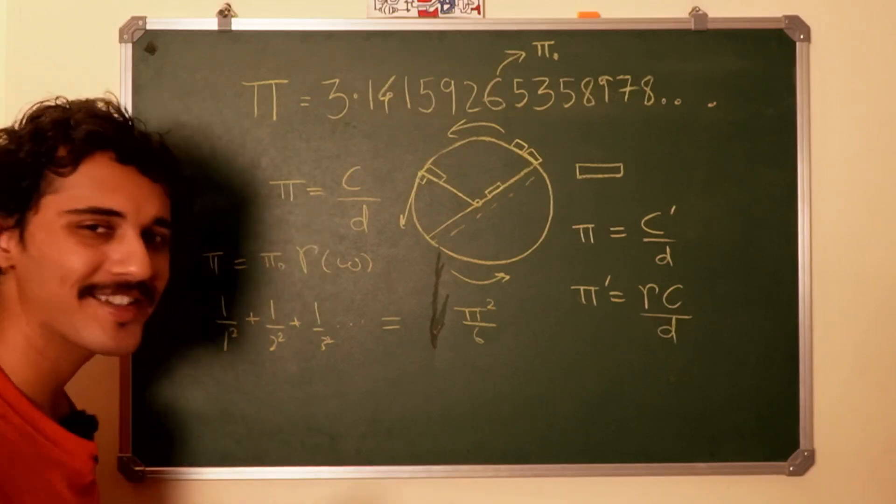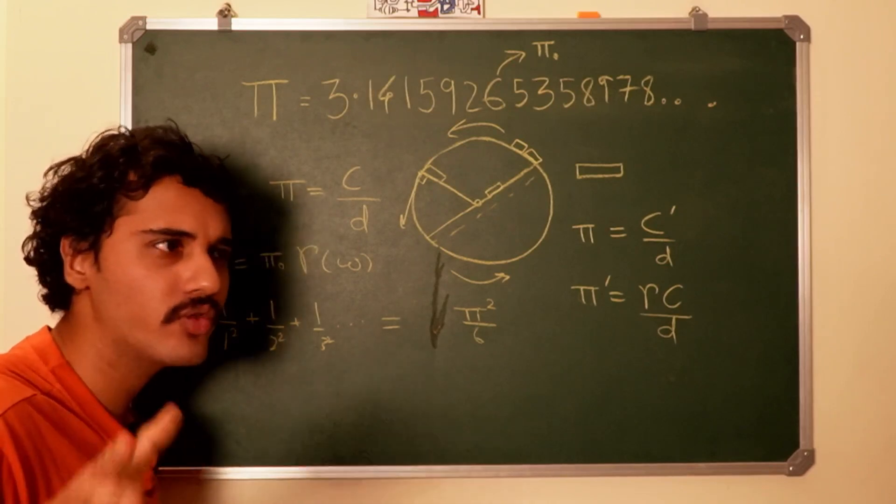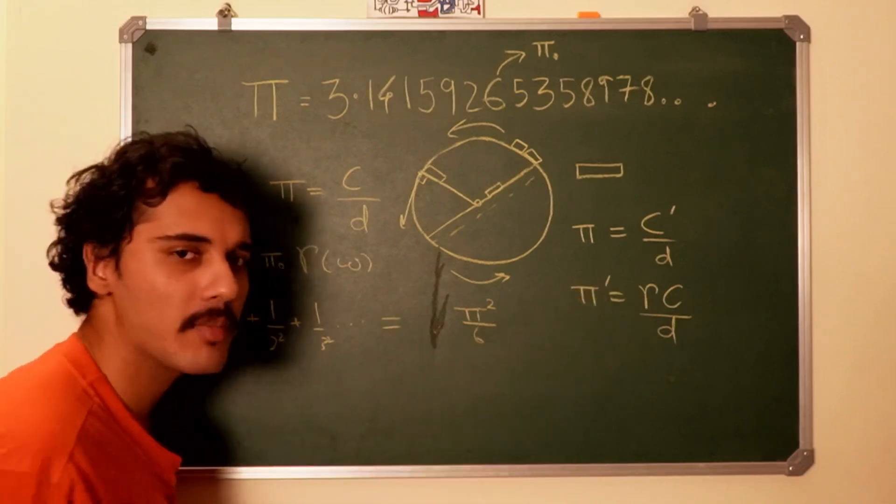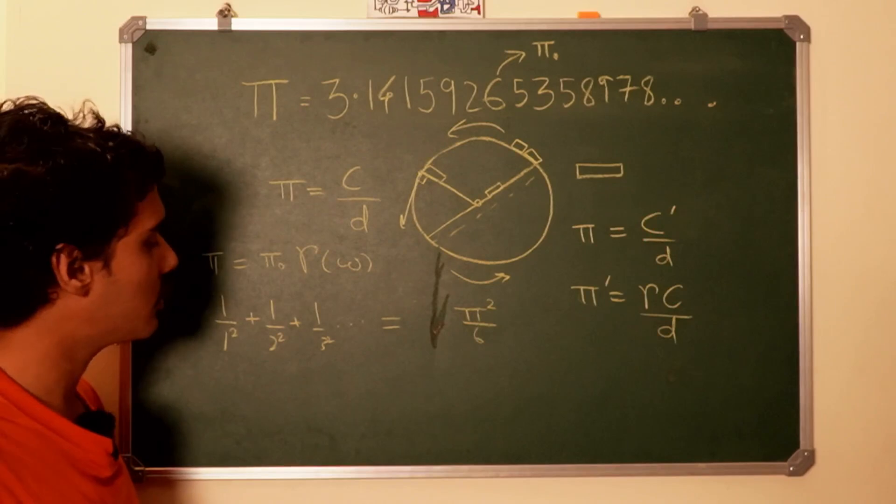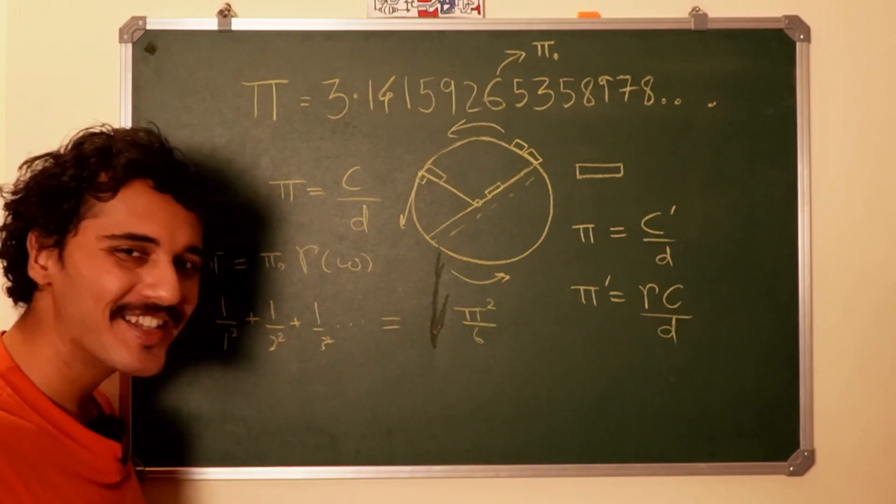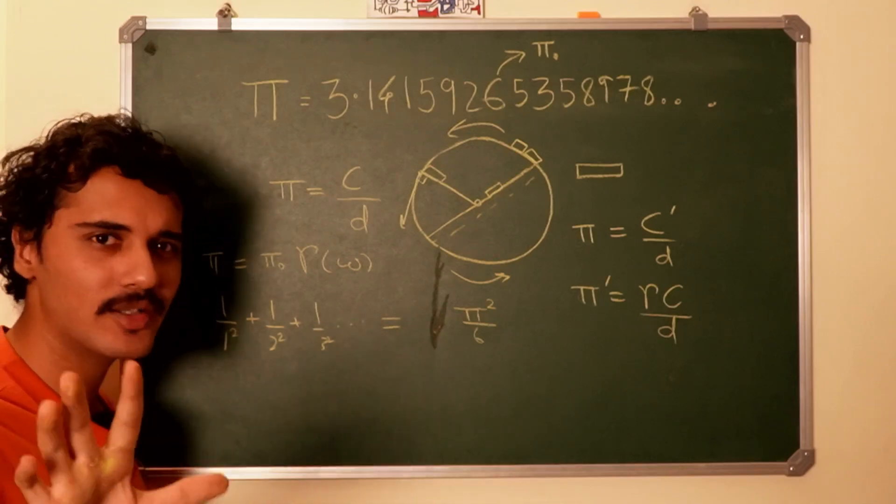Now here is the crazy thing that I would like to say: what if numbers get scaled by gamma in moving frames? How do you know that your 2 is the same as the 2 for a person who is moving? And you might think that's crazy, but listen to this.